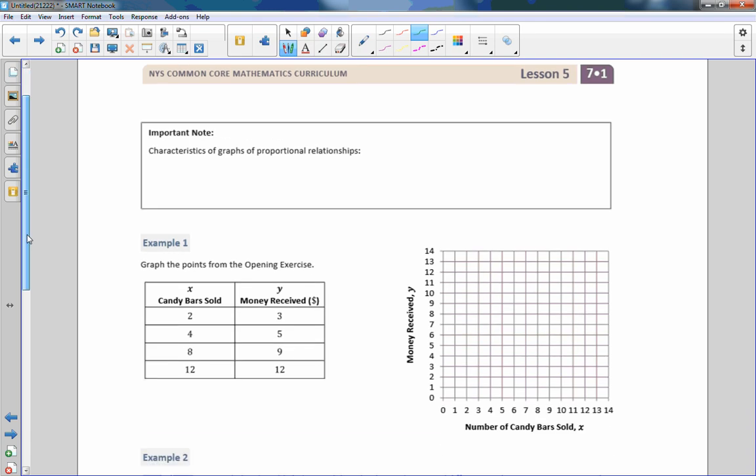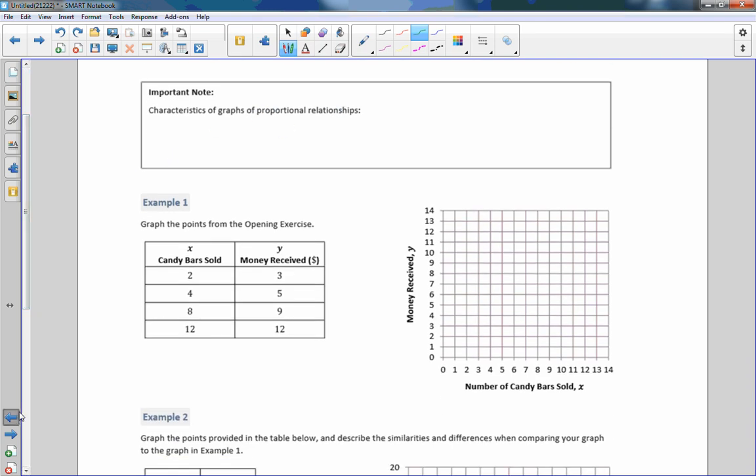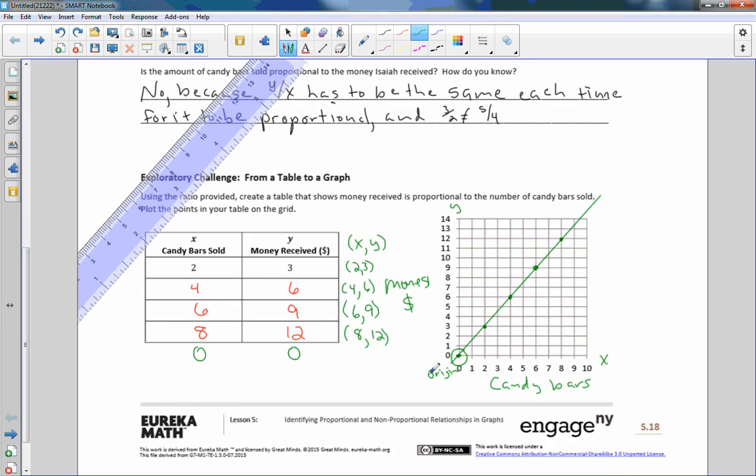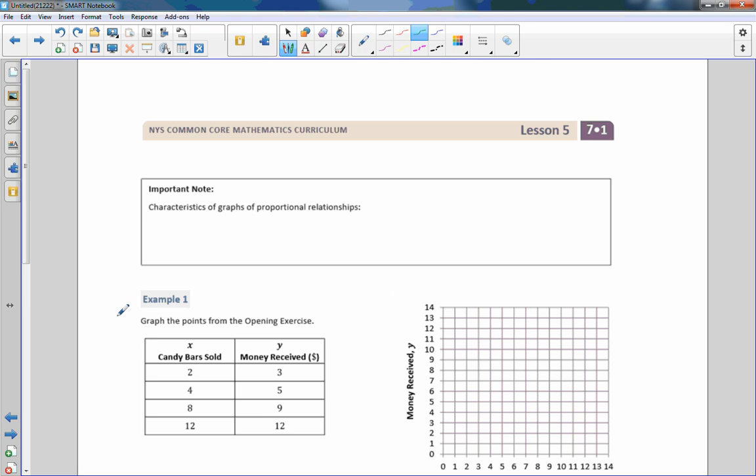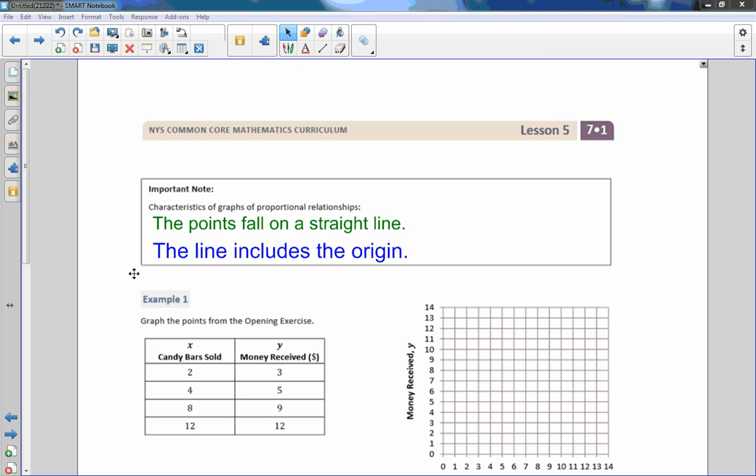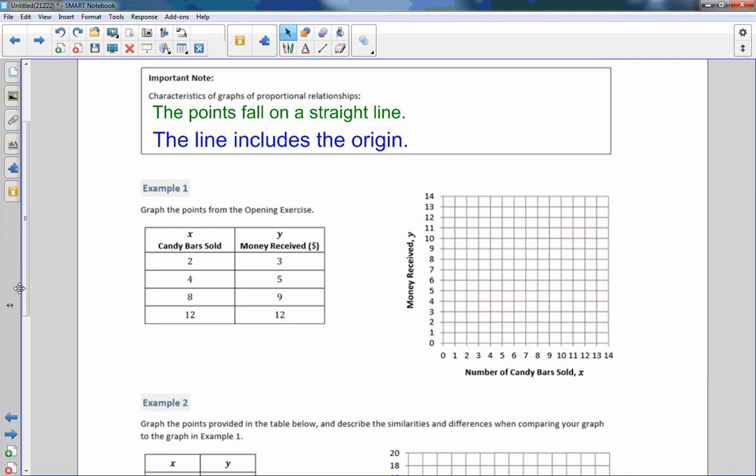Next page. Important note. Characteristics of graphs of proportional relationships. This is a graph of a proportional set of numbers. The numbers are proportional. What do you see about this? Well, one, it's a straight line. The points are all on a straight line and it goes through the origin. So the points fall on a straight line and the line includes the origin. Those are the characteristics of a graph that's proportional.